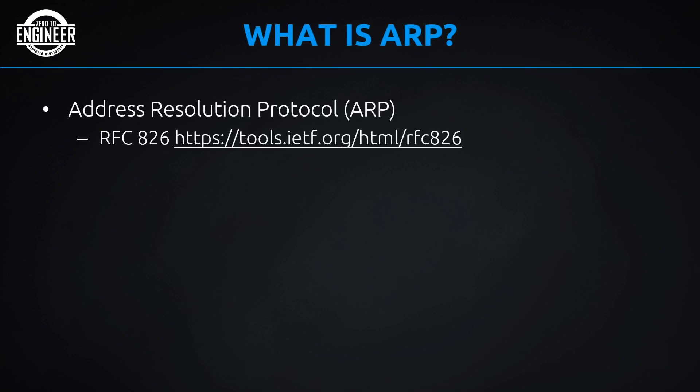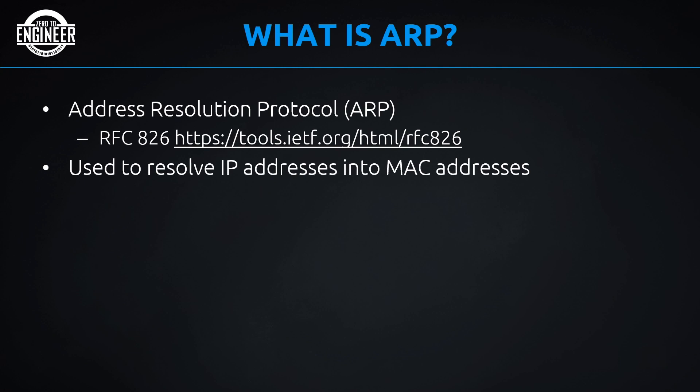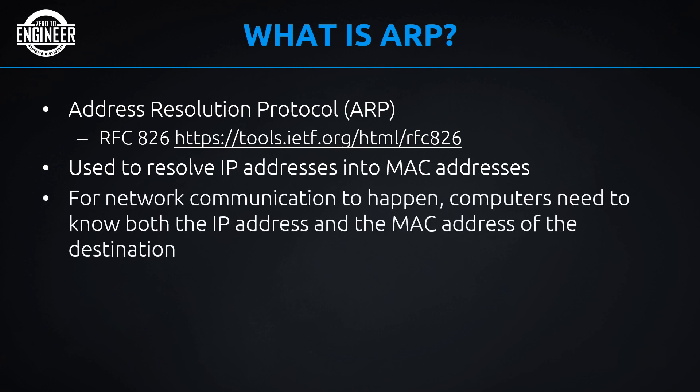So what is ARP? ARP is Address Resolution Protocol, defined by the Internet Engineering Task Force Request for Comments number 826. It's used to resolve IP addresses into MAC addresses, meaning the IP address is already known but the MAC is not. Computers need to know both the IP address and the MAC address of a destination before they can start network communication, and ARP is how we ensure we always have both.